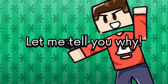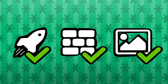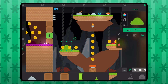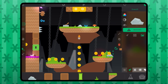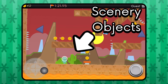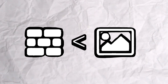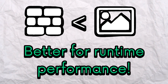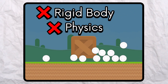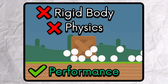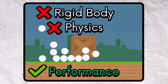Scenery objects are actually pretty useful. You would use them for background or decorative objects in a scene that the player can walk through with no problem. The advantage that scenery objects have over wall objects is that they are very light on performance. Because they don't have rigid bodies and therefore no physics, less computing resources are spent on managing scenery objects than wall objects.